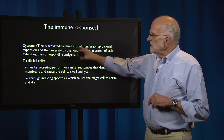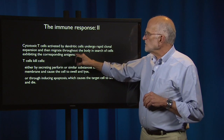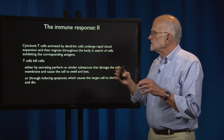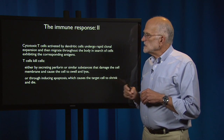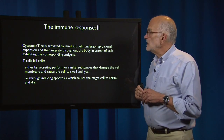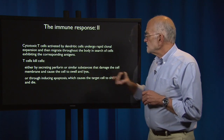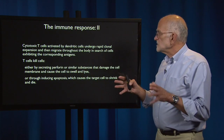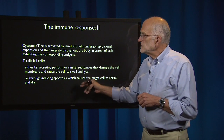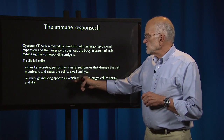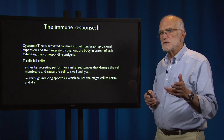Cytotoxic T cells activated by dendritic cells undergo rapid clonal expansion and migrate throughout the body in search of cells exhibiting corresponding antigens. T cells kill cells either by secreting perforin or similar substances that damage the cell membrane and cause the cell to swell and lyse, or they give the target cell a signal of apoptosis, causing it to shrink and die — essentially telling it to commit suicide.